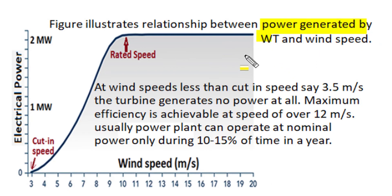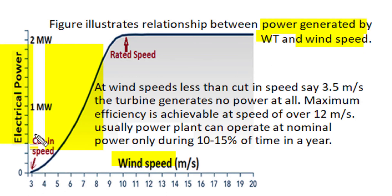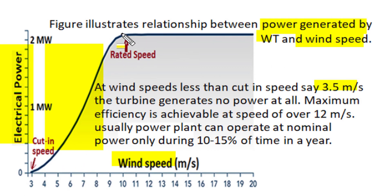Theoretically, power generated by a wind turbine is directly proportional to the cube of wind speed, and this is also true for low wind speeds. At wind speeds less than 3 or 3.5 meters per second, the turbine generates no power at all. The minimum speed above which the turbine can produce electrical output is called the cut-in speed, and typically the cut-in speed is 3.5 meters per second for utility-size wind turbines.